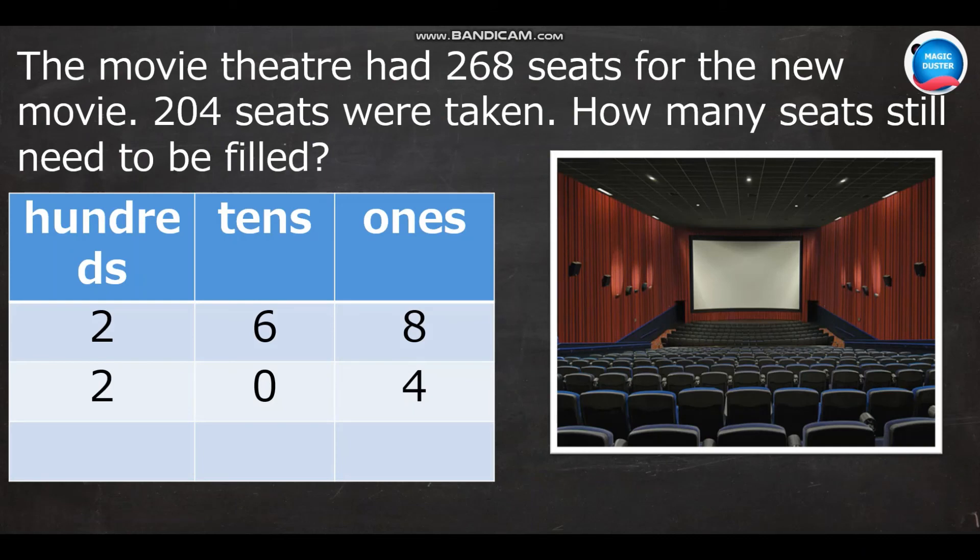Then, the next one. The movie theater had 268 seats for the new movie. 204 seats were taken. How many seats still need to be filled? To find out the remaining, we should do subtraction.